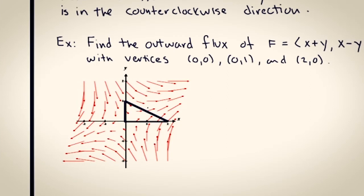This vector right here is exiting the region, so at this point on the triangle there will be a positive flux density.